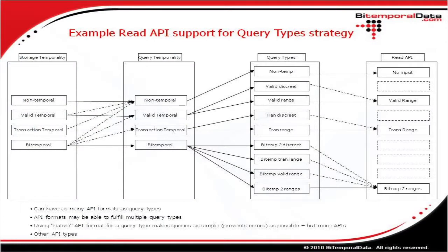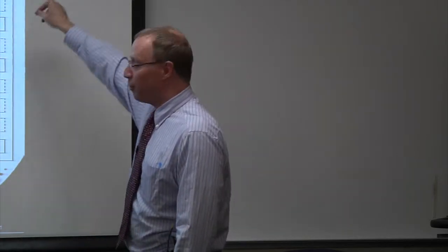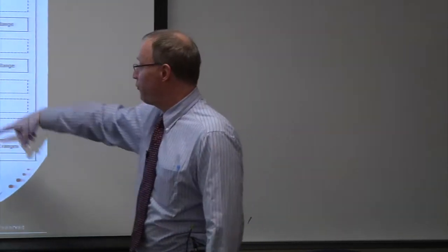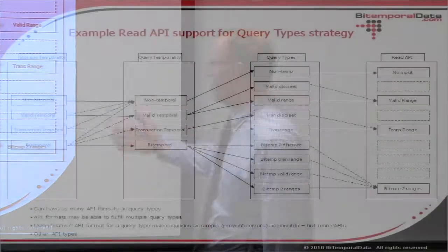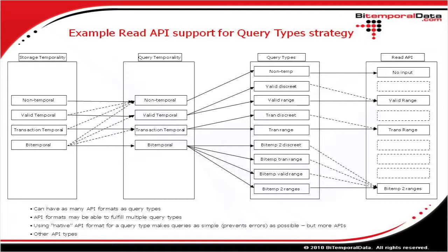The next consideration is API design. Given these nine different query types, what might you want to expose to support them? You could have nine different APIs — each very simple and tailor-made — but that adds complexity in the number of APIs. Alternatively, you could have a limited number of APIs that fulfill all query types, but they may be overly complex. For example, a bi-temporal query with two discrete timestamps doesn't need the complexity of supporting two ranges.